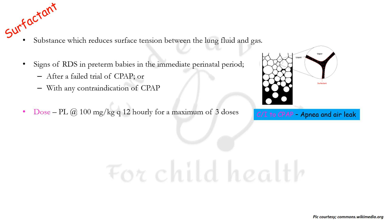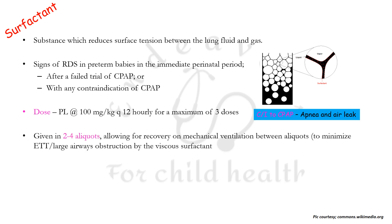The dose of surfactant is calculated in terms of the phospholipid content. Phospholipid should be given at 100 mg/kg every 12 hours for a maximum of three doses, and can be given preferably as early as six hours if required to repeat the dose. It is given in aliquots of two to four, allowing for recovery on mechanical ventilation between aliquots to minimize endotracheal tube obstruction by the viscosity of the surfactant.